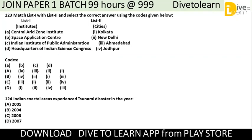You can try matching by yourself. The correct option is A, that is code 4-1. Central Arid Zone Institution is in Jodhpur. Space Application Center is in Ahmedabad. Indian Institute of Public Administration is in New Delhi. And the Headquarters of Indian Science Congress is in Kolkata. So the correct option is A.